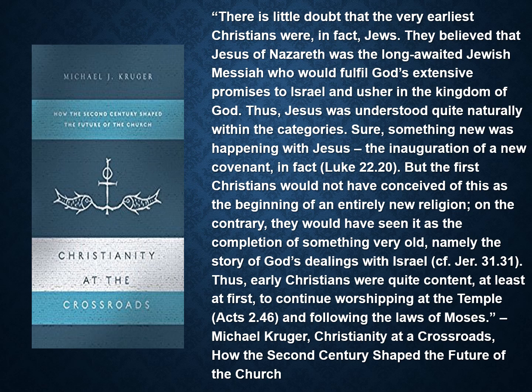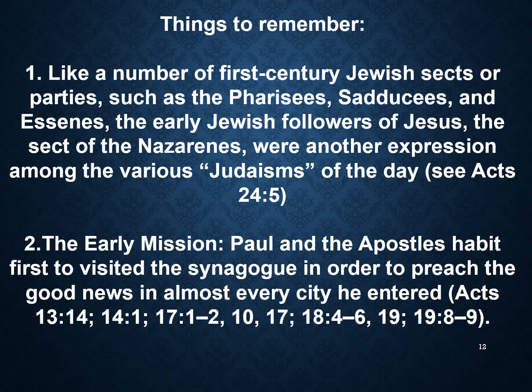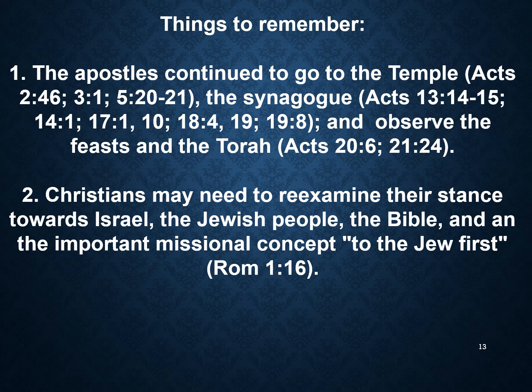Like a number of first-century Jewish sects — such as the Pharisees, Sadducees, and Essenes — the early Jewish followers of Jesus, the sect of the Nazarenes, were just another expression among the various Judaisms of that day, as seen in Acts 24:5. Paul and the apostles habitually visited the synagogue first, going to the Jew first to preach the good news in almost every city they entered. The apostles continued to go to the temple, the synagogue, and observed the feasts and the Torah. This means that today, as Christians, we may need to re-examine our stance towards Israel, the Jewish people, the Bible, and the missional concept of going to the Jew first.